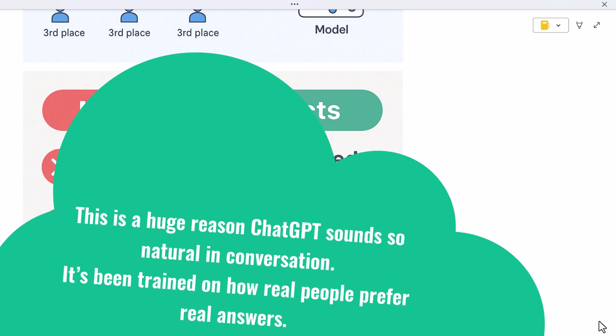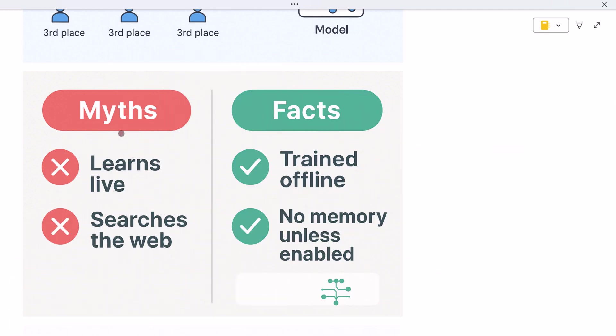Now let's clear up a few common myths. ChatGPT does not learn from your chat in real time. It doesn't remember your personal messages, unless memory is turned on, and that's optional. It doesn't search the web. It doesn't update itself live. And it doesn't know the world like a human. It only knows what it learned before it was deployed. That's what makes it fast and surprisingly useful.